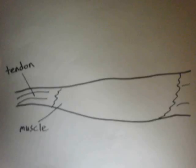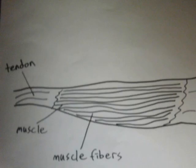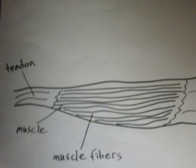So here we have a muscle. Let's cover some anatomy. Within this muscle there are many thousands of muscle fibers that run the length of the muscle. Those fibers are activated by motor neurons, cells that transmit signals from the brain. A muscle fiber is only connected to one neuron, but one neuron activates many muscle fibers.